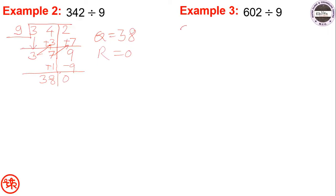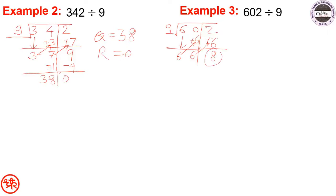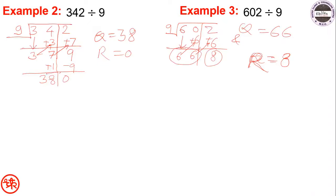Next example: 602 divided by 9. Draw vertical line, divide by 9, draw horizontal line, write 6 below 6. Add this 6 to the next digit: 0 plus 6 is 6. Add this 6 to the next digit: 2 plus 6 is 8. Since 8 is smaller than 9, remainder equals 8 and quotient equals 66.